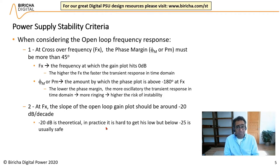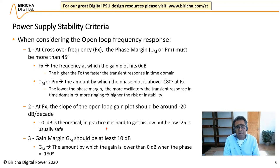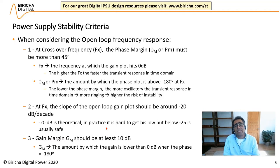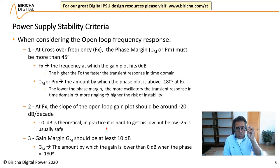20 dB per decade is theoretical; in practice you rarely get exactly 20 dBs, and anything around 25 is usually safe. Finally, gain margin: it should be at least 10 dB. The gain margin is defined as how much below 0 dB the gain is when the phase hits minus 180 degrees. The software will print crossover frequency, phase margin, slope, and gain margin as numbers so you can quickly determine whether the power supply is going to be stable.